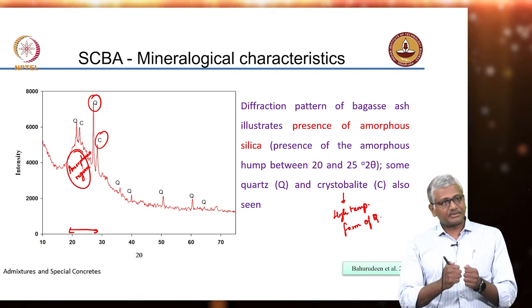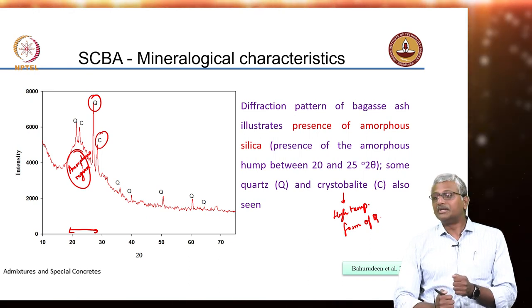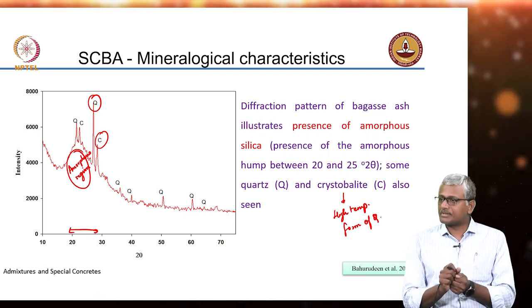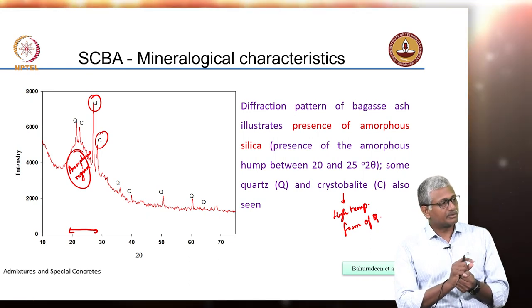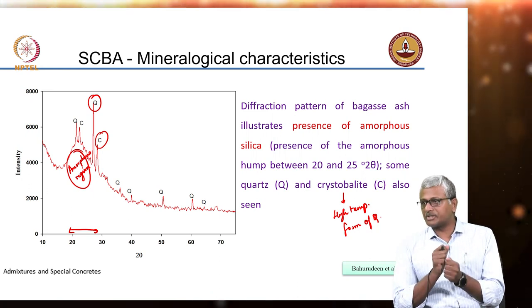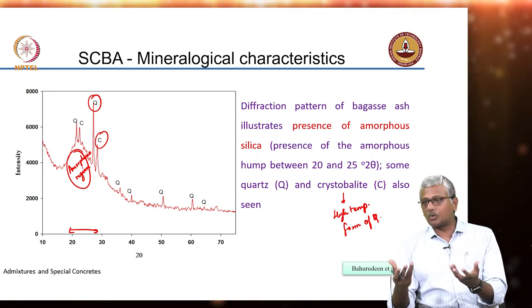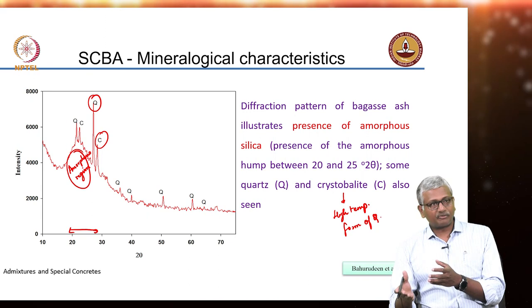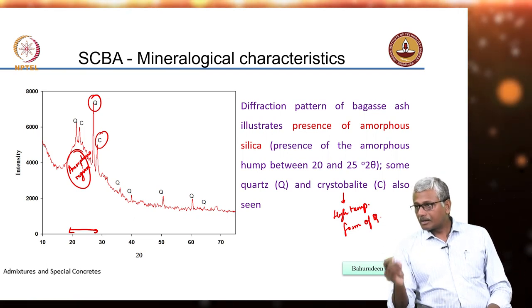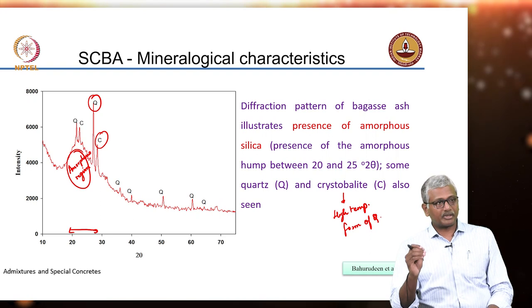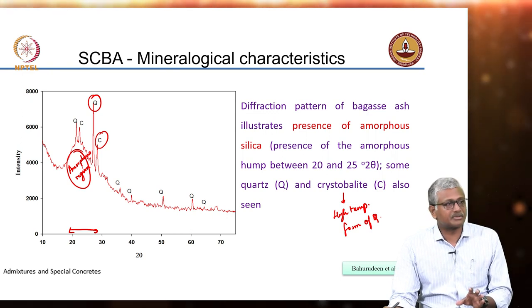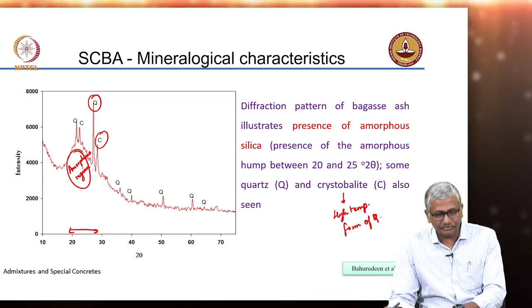Even the alteration of quartz crystal structure due to temperature and pressure can make it more reactive. If you grind quartz very fine, you not only make it finer but also alter its crystal structure due to grinding pressure, which can activate quartz. The same happens during metamorphism when quartz transforms to cristobalite. Nevertheless, what is observed overall is a very high degree of amorphous nature in sugarcane bagasse ash.